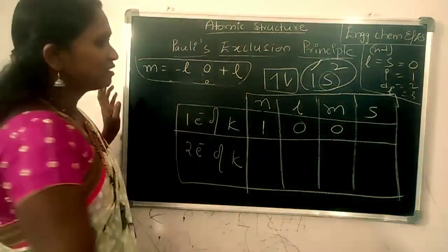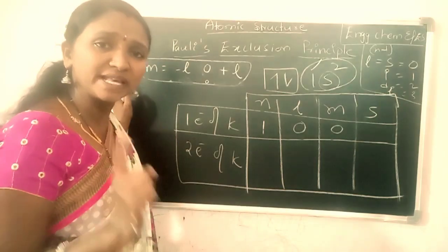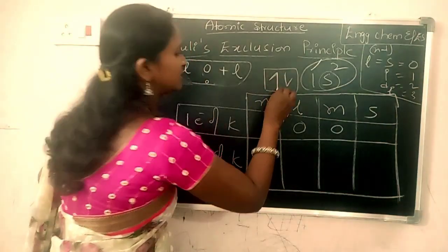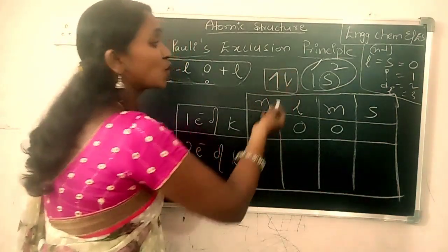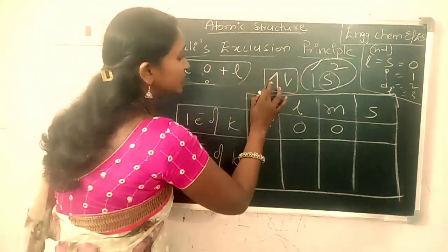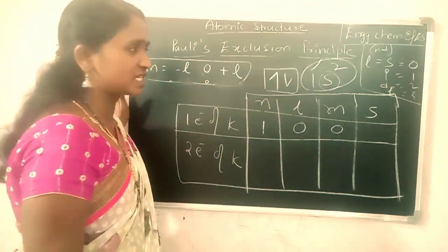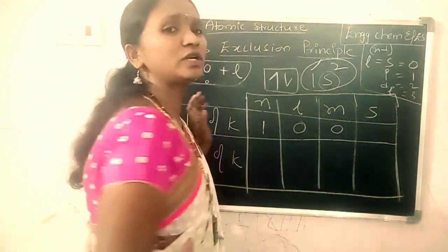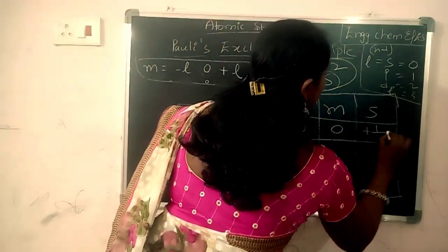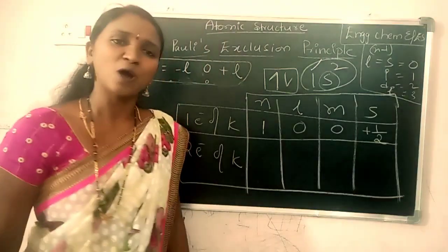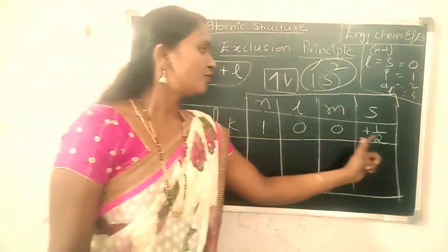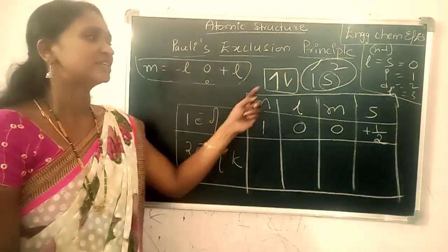The spin quantum number s: the first electron is in a clockwise direction. So if any electron is in clockwise direction, we give the value plus one-half. So these are the four quantum number values for the first electron: n=1, l=0, m=0, s=+1/2.